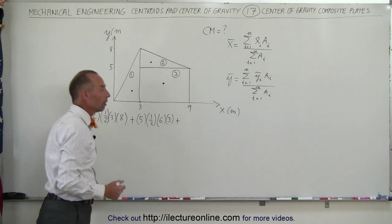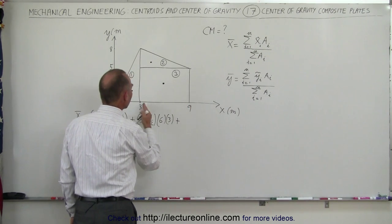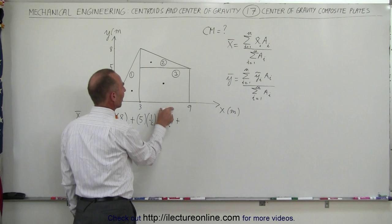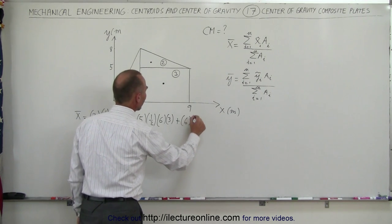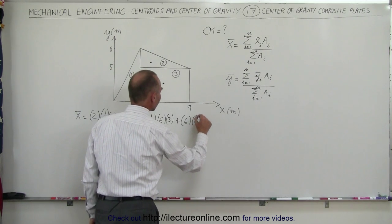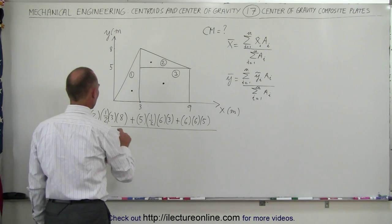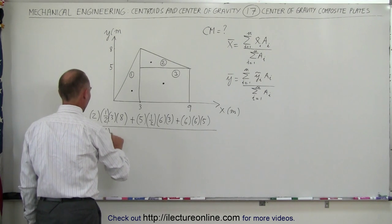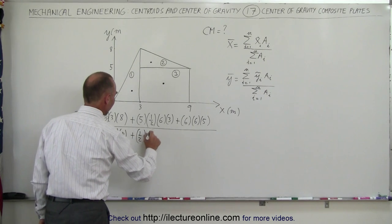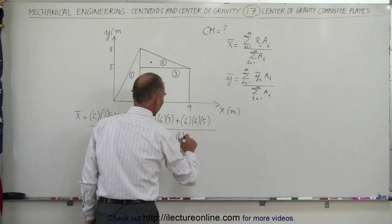Finally, we have the rectangle. The x-coordinate of the center of mass of the rectangle would be right halfway between 3 and 9 — that would be 6, since 3 plus 3 is 6 and 6 plus 3 is 9. The area of the rectangle would be width times height, so 6 times 5, which is 30. We divide the whole numerator by the total areas: one-half times 3 times 8, plus one-half times 6 times 3, plus 6 times 5.